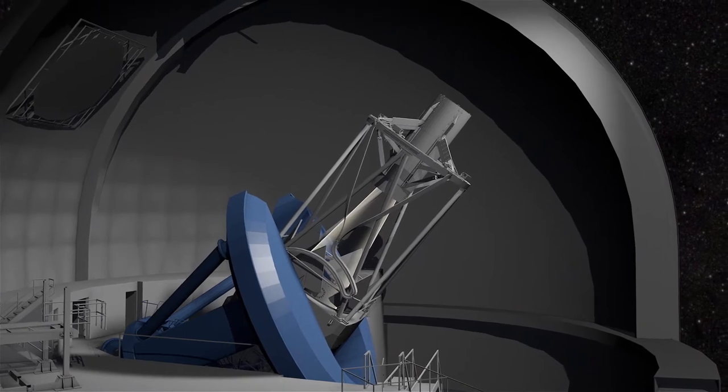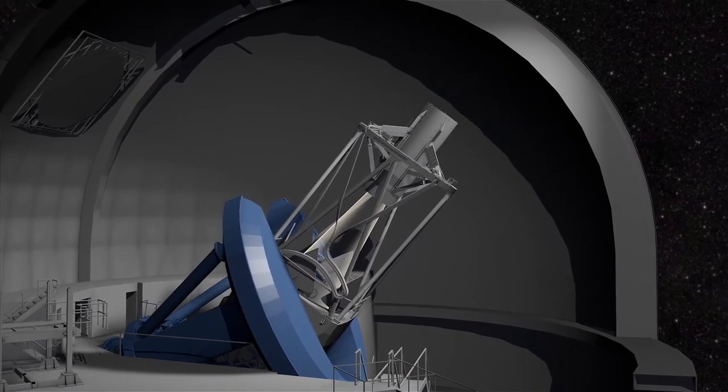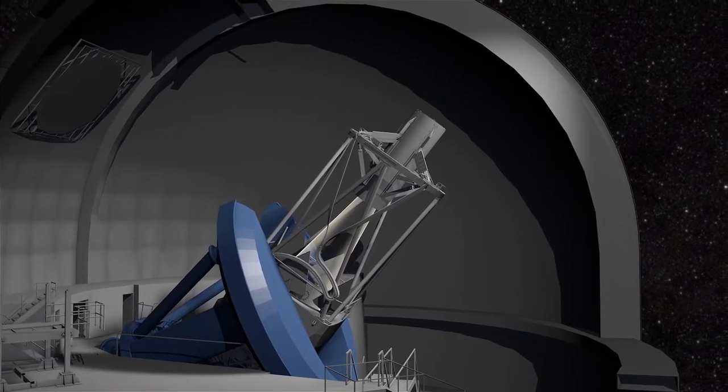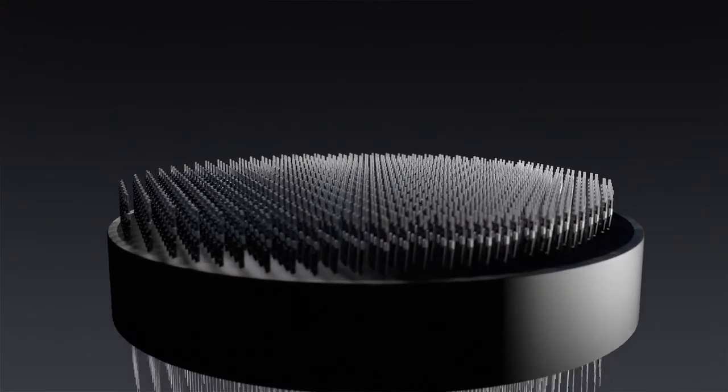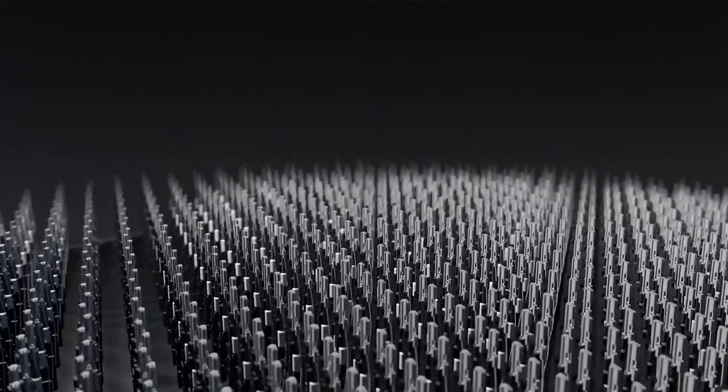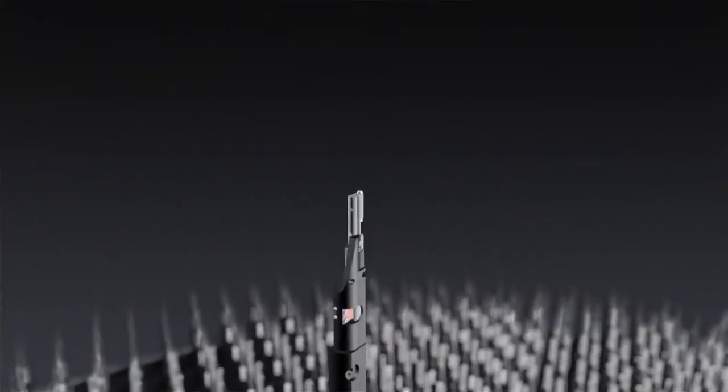After passing through the set of lenses, the galaxy's light reaches fiber optic cables in DESI's focal plane at the top end of the telescope. 5,000 robotic positioners, each carrying a single optical fiber,